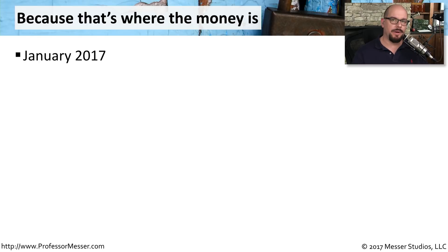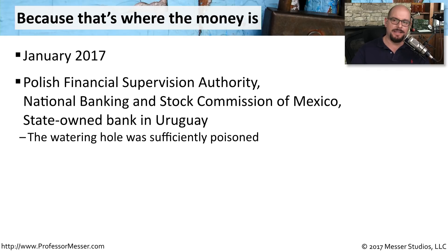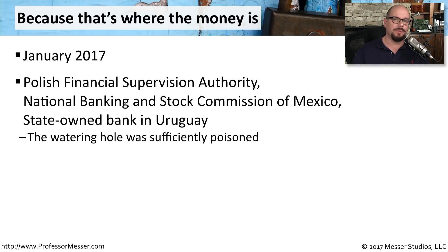A good example of an actual watering hole attack occurred in January 2017, simultaneously in different places around the world. The Polish Financial Supervision Authority was infected, the National Banking and Stock Commission of Mexico was infected, and a state-owned bank in Uruguay was infected. The attackers knew that people would be visiting those locations from other banks and financial organizations, and by infecting the watering hole, they were able to infect those visitors as well.